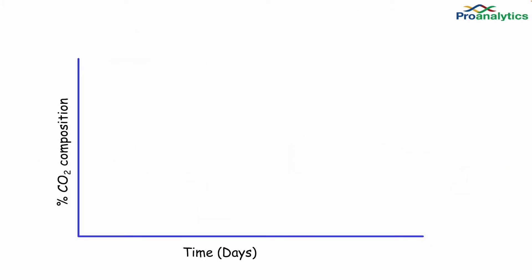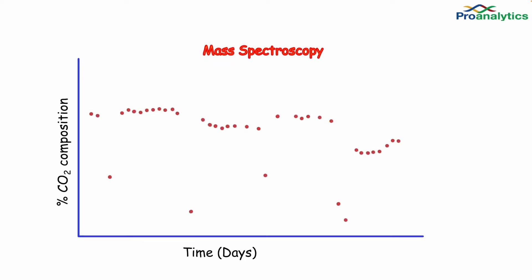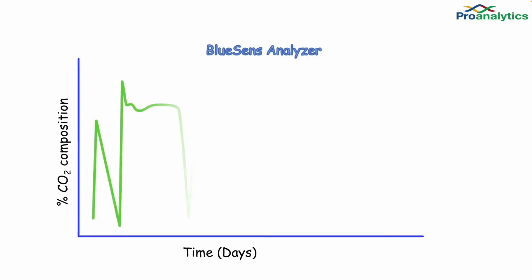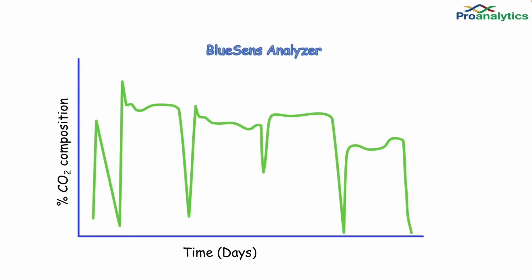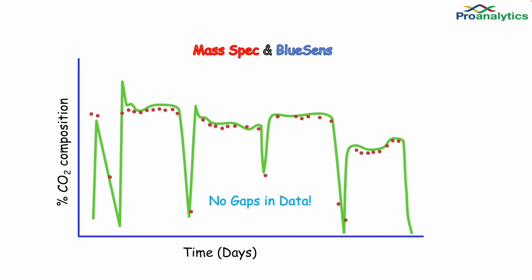Let's compare the data sets. Here we have the mass spectroscopy data showing all the sampling points in a run, and here is the BlueSense data on the same run. When we compare the two graphs, we can see all the data points that were missed by mass spectroscopy. The mass spec can be used to verify readings instead of trying to generate a point-by-point graph, and the ability to read data in real-time means there are no gaps in the data from run to run.